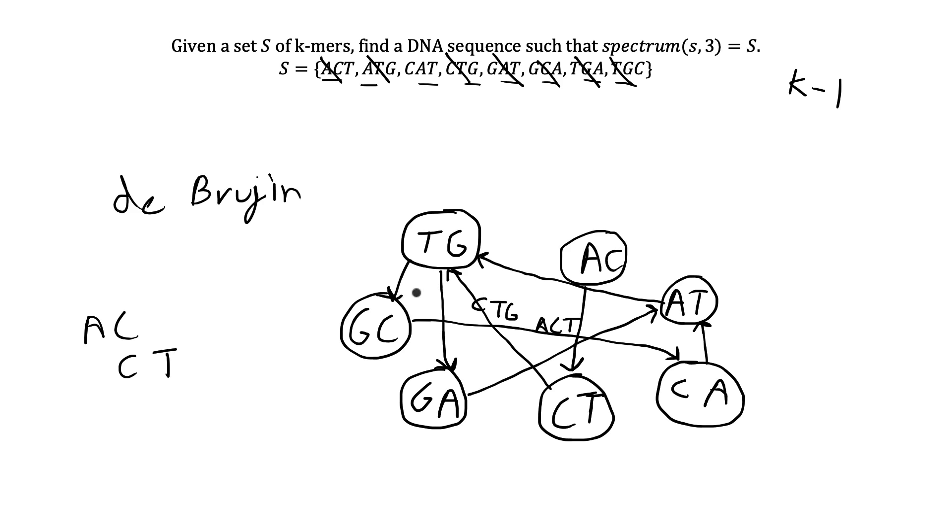Now that we have constructed the DeBruijn graph of overlapping sequences, the way we're going to find the original DNA sequence is by finding the Eulerian path through the diagram. And that is just the path where you're going to pass through each edge one time. So that is the definition of an Eulerian path.